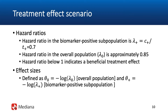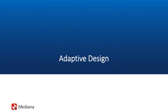We make a standard assumption that a hazard ratio below 1 indicates a beneficial treatment effect. The effect size, just like in all other survival trials, will be defined as the negative logarithm of the hazard ratio. The effect sizes will be denoted by theta 0 for the overall population and theta plus for the biomarker positive subpopulation. Using this definition, the resulting effect sizes would have the same interpretation as effect sizes in trials with continuous or binary efficacy endpoints.